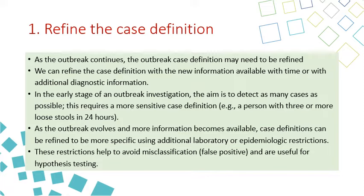The first step in follow-up investigations is to refine the case definition. As the outbreak continues, the case definition may need to be refined using new information and additional diagnostic data. In the early stage, the aim is to detect as many cases as possible, requiring a more sensitive case definition — for example, a person with three or more loose stools in 24 hours. As the outbreak evolves, the case definition can be refined to be more specific using additional laboratory or epidemiological restrictions, helping to avoid misclassification, false positives, and to support hypothesis testing.